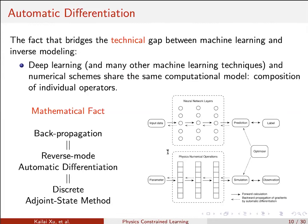This morning, Chris also talked about automatic differentiation, so I will not give details on that. But the mathematical fact that enables us to use automatic differentiation for this kind of inverse modeling is that back-propagation in neural networks is mathematically equivalent to reverse-mode automatic differentiation, which is also equivalent to the so-called discrete adjoint method — the standard method for doing PDE-constrained optimization in classical work.